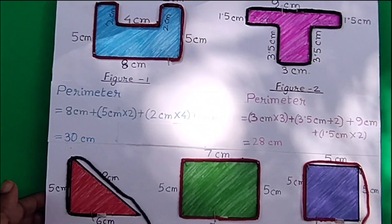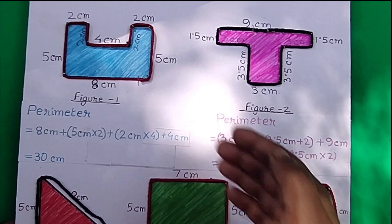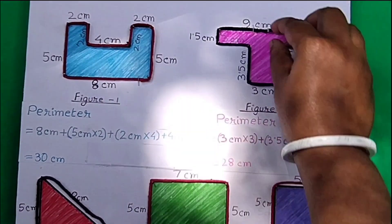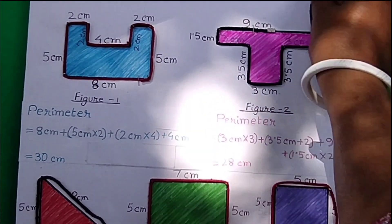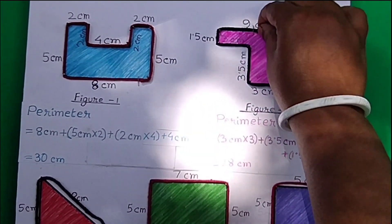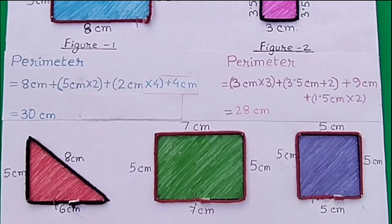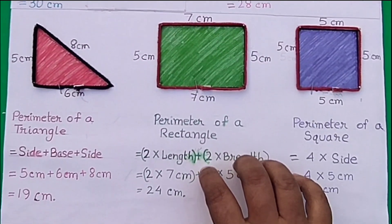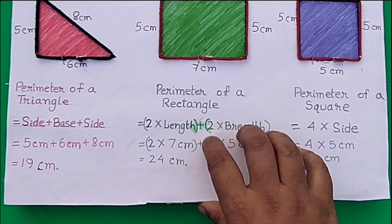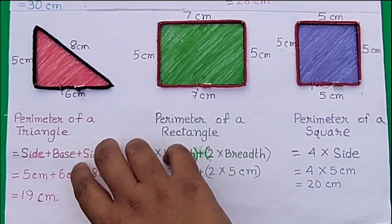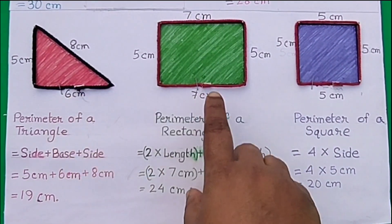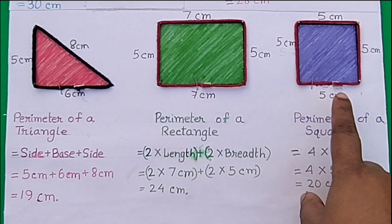Similarly, we can find and check the perimeter of the second figure. Now let's see how to find the perimeter of a triangle, rectangle, and square.